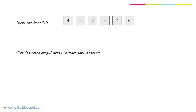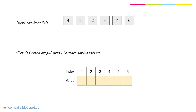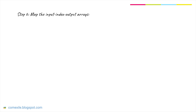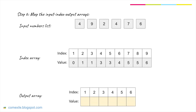Once the index array is ready to be used, we need to create an empty array to store the sorted number list. Let's call this the output array. Step 6 is the processing step where we will be mapping the indexes with the values and filling in the output array.